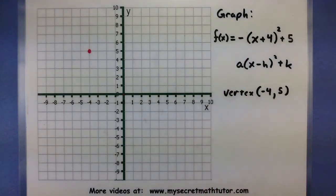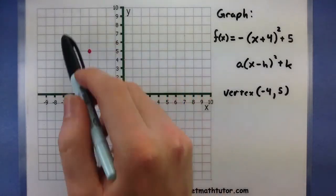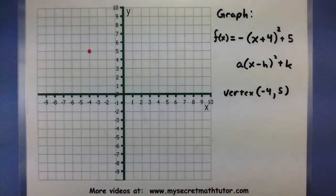The negative sign, however, tells me that it has been reflected. So normally the parabola would go up, but because of that negative sign, it will go down.